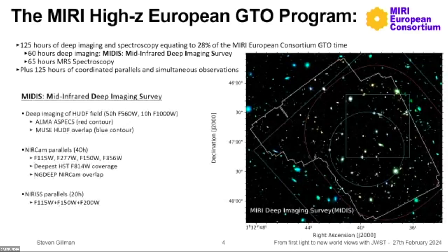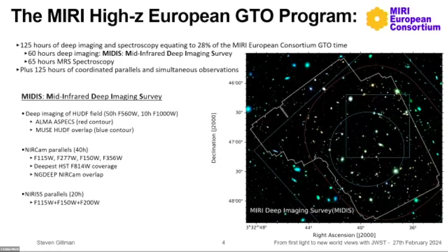This is what the MIRI Deep Imaging Survey looks like. The white contour on the right is the MIRI footprint, which perfectly overlaps with the deep MUSE observations in the field and the Hubble imaging shown in the background. The blue contours show ALMA from the ASPECS survey. Handily, this is also the region JADES observed with NIRCam, so we have deep NIRCam imaging. We also get NIRCam parallels in another part of the field with deep HST ACS imaging. This talk will focus on the MIRI work.